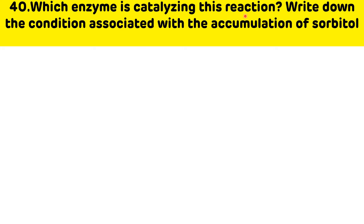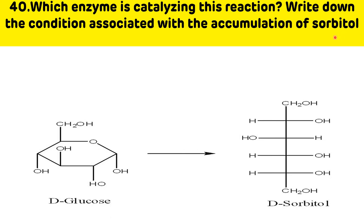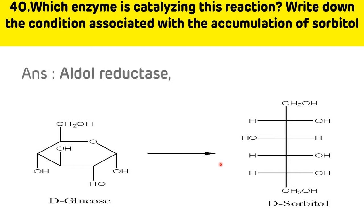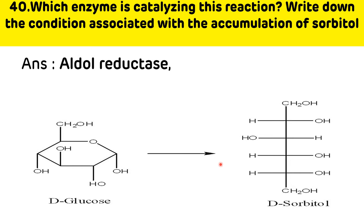Which enzyme is catalyzing this reaction? Write down the condition associated with the accumulation of sorbitol. Glucose is converted to sorbitol by aldose reductase. Sorbitol gets accumulated in uncontrolled diabetes mellitus and leads to diabetic cataract.